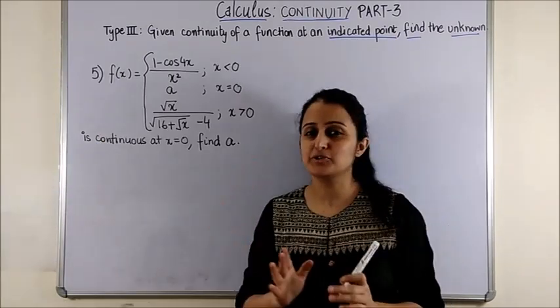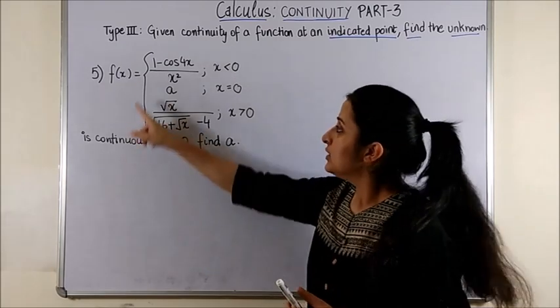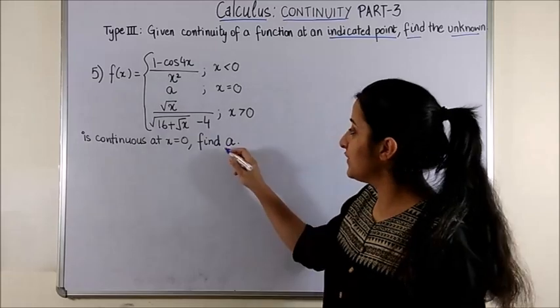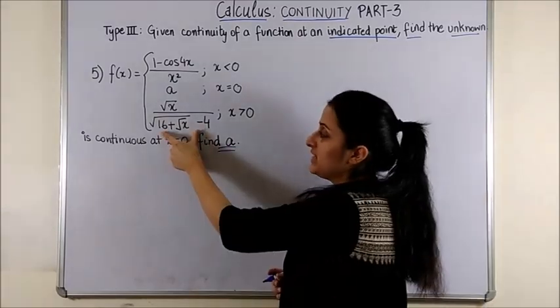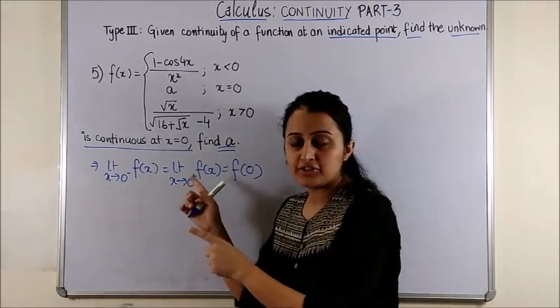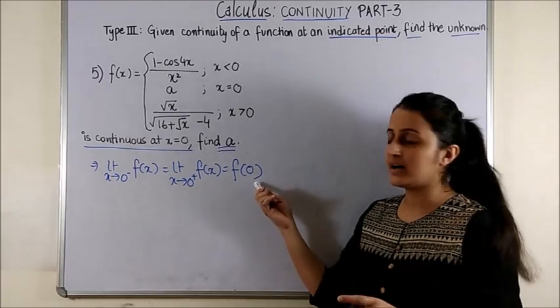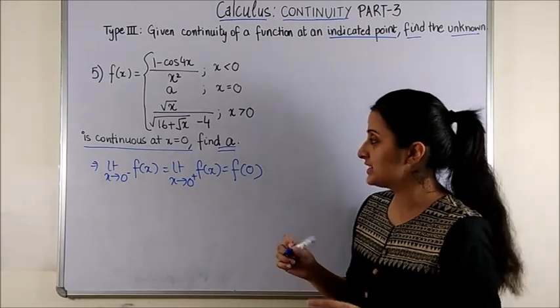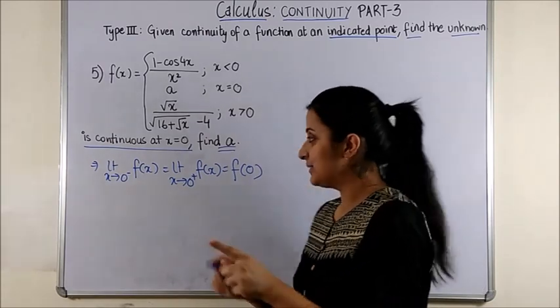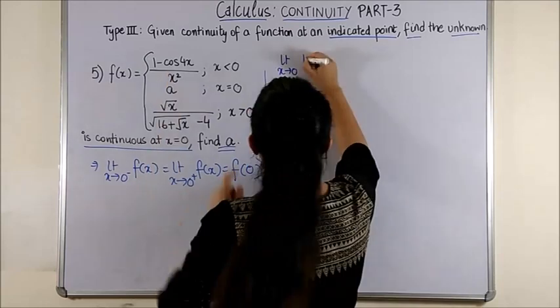Now the fifth one looks very complicated but it's just a little bit lengthy. So if you are given the function which is continuous at 0 you have to find the unknown a. Just be very careful when you put the square root sign. So going by the continuity of the function at x equal to 0 we get LHL equal to RHL equal to value of the function at 0. So let's try and sort one at a time. So if I take LHL is equal to f of 0 initially. I equate these two.